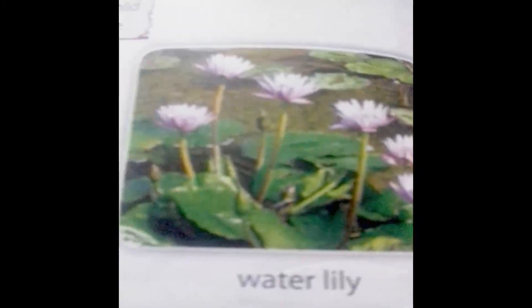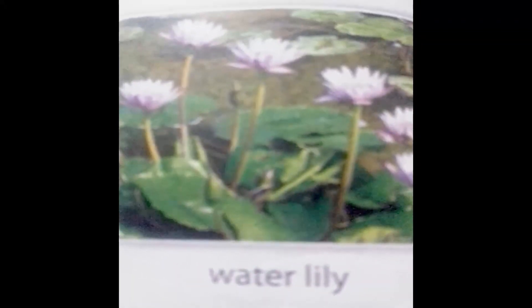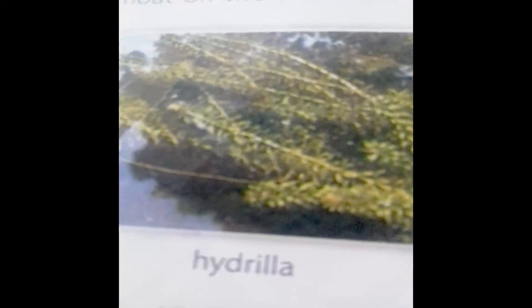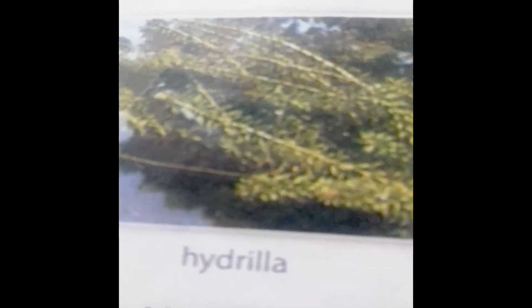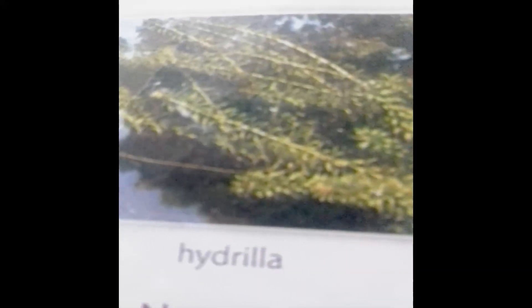Here we can see the picture of water lily, which is an example of a fixed plant. Next is hydrilla — this plant is known as hydrilla and is called an underwater plant. Pond weed, hydrilla, and tape grass are underwater plants. Such plants are completely submerged in water and have thin, ribbon-like, narrow leaves. There are no stomata in their leaves.